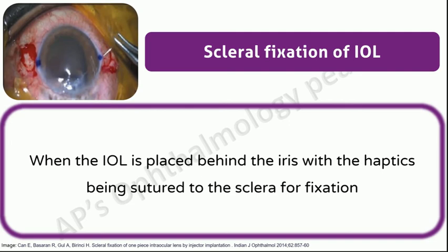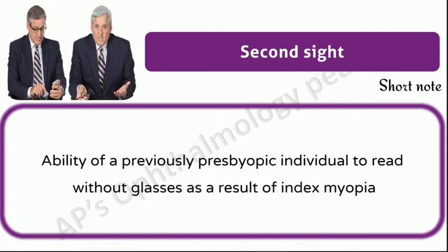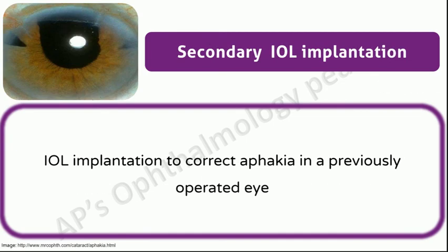Scleral fixation of IOL: when the IOL is placed behind the iris with the haptics being sutured to the sclera for fixation. This is done when there is a large posterior capsule rent. Second sight: ability of a previously presbyopic individual to read without glasses as a result of index myopia. You may click on the link above to watch my video on second sight. Alternately, you may click on the link in the description box.